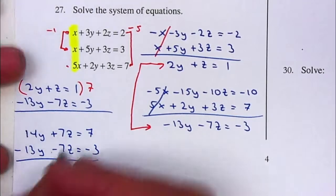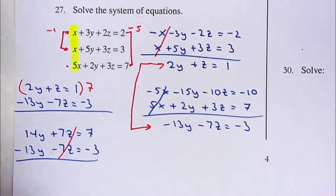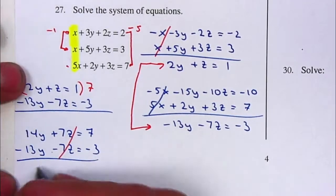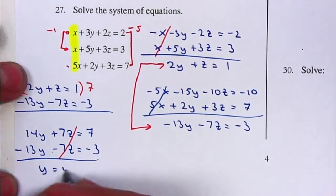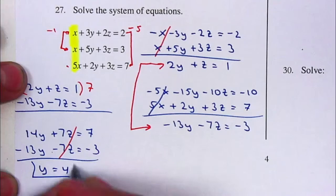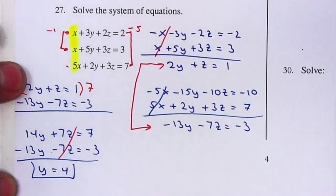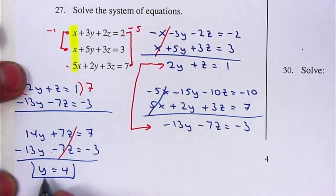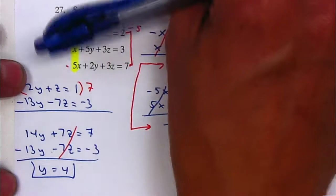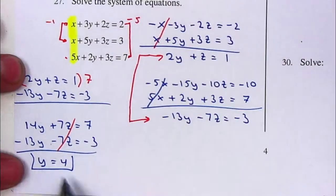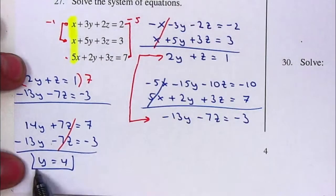The Z's cancel and we get Y is equal to four. Usually, if you end up with a whole number, most likely you're doing it correctly. But we can check at the very end. For now, I have the Y value.